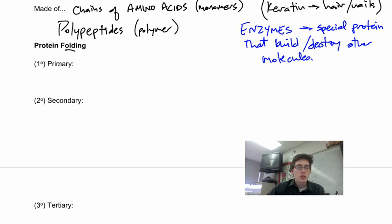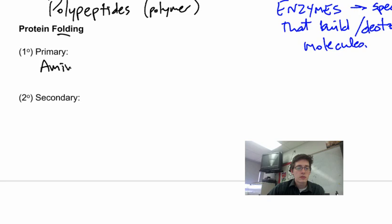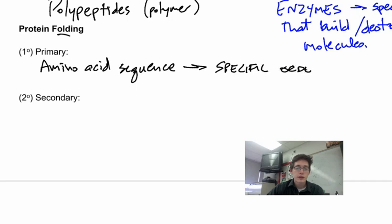So the primary structure of a protein, this first degree structure, this is simply the amino acid sequence. So this is amino acid 1, 2, 3, 4, whatever, in the specific order that they need to be in. This is specific. If one amino acid is not in the right place, the protein will not function correctly.